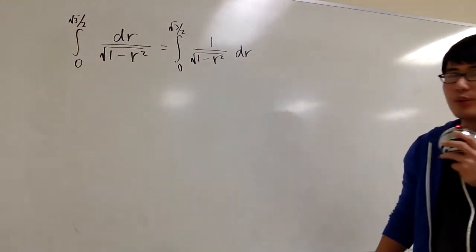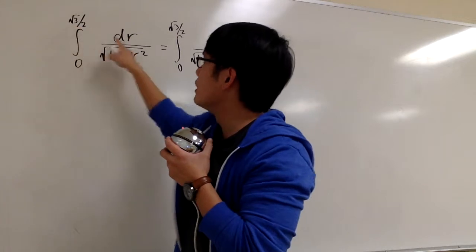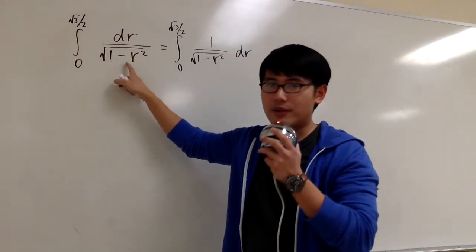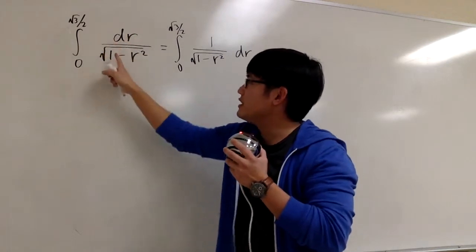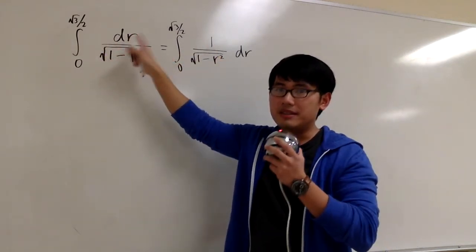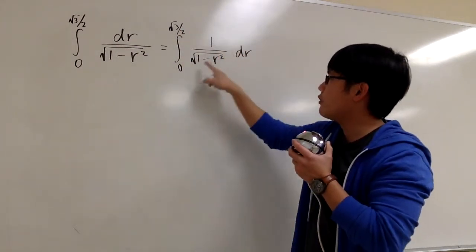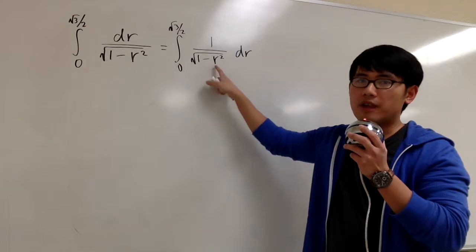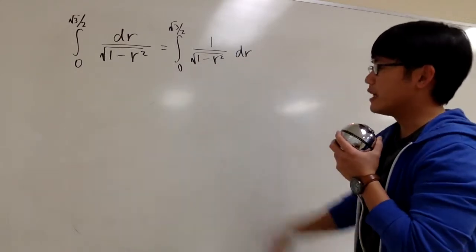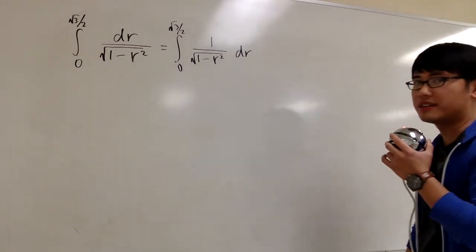Now let's take a look at a more intimidating integral. This is the integral from 0 to square root of 3 over 2, dr over square root of 1 minus r squared. I want to make a note that this is the same as putting the dr on the top. They just look different — different notation, different ways of writing it.